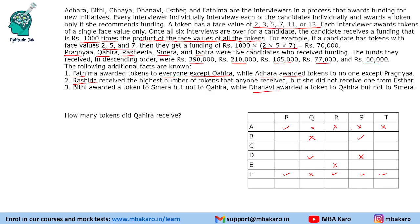Now we need to find the face values of these tokens by doing prime factorization of the given funding amounts — ignoring the 1000 factor. 390 = 13 × 30 = 13 × 2 × 3 × 5. So a candidate receiving 390,000 holds tokens with face values 13, 2, 3 and 5.